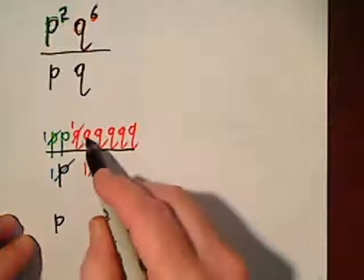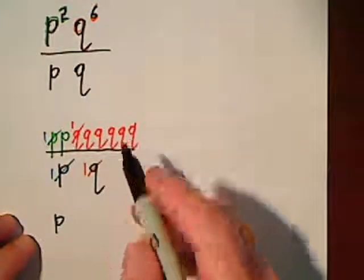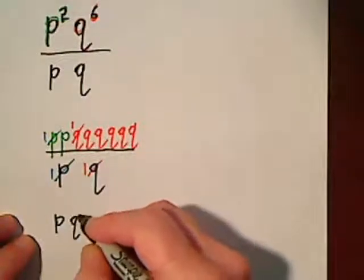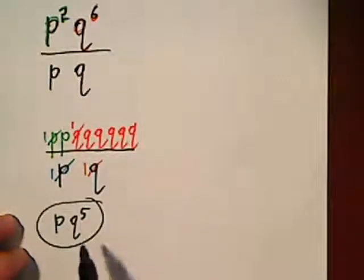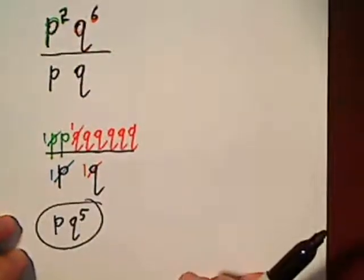and then we have one, two, three, four, five Q's. So this is simplified as much as possible.